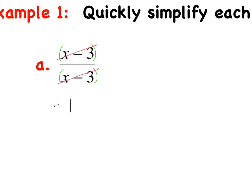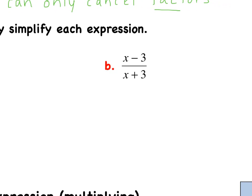Looking at example B: x is a term, 3 is a term, x minus 3 is the factor, and x plus 3 is the factor. I have x minus 3 over x plus 3. In order to cancel, they need to be identical. I have x minus 3 in the numerator and x plus 3 in the denominator — they are not the same factor, so the final answer remains x minus 3 over x plus 3. The x's don't cancel and the 3's don't cancel.